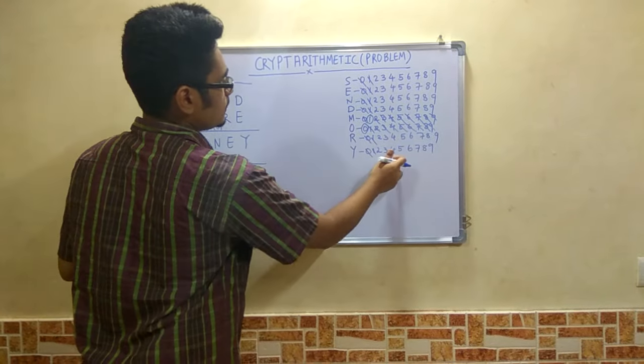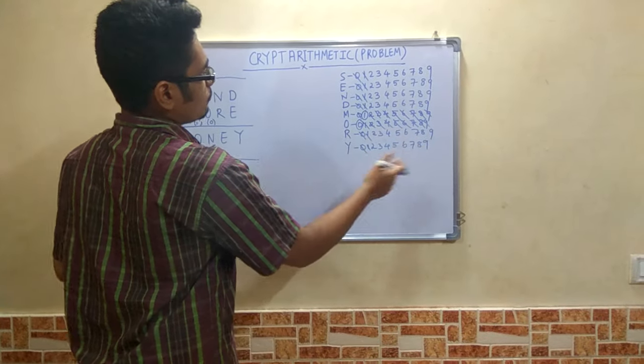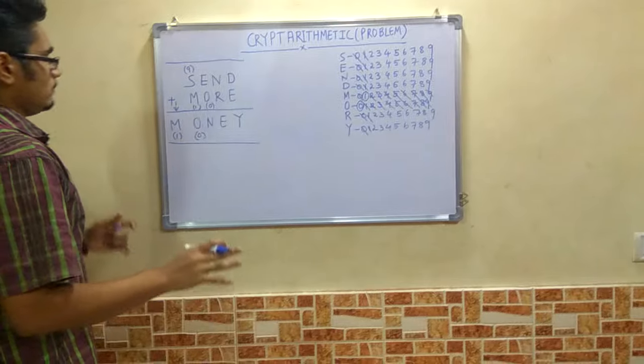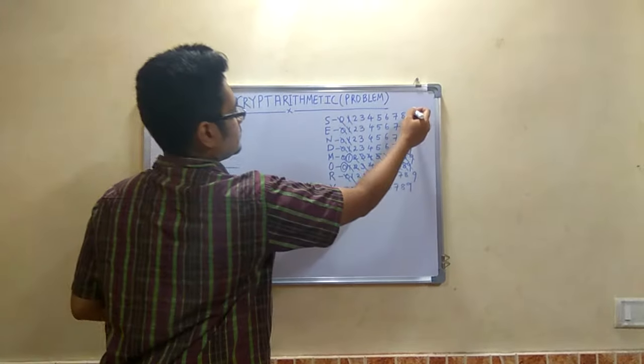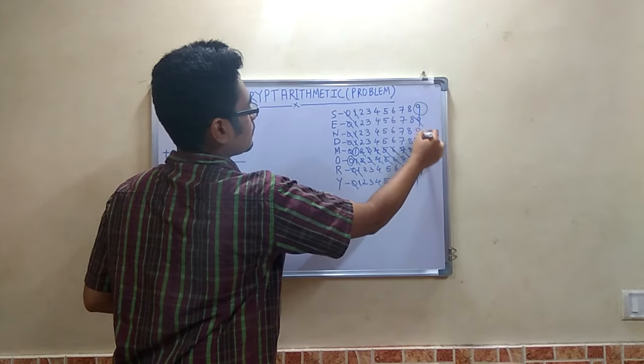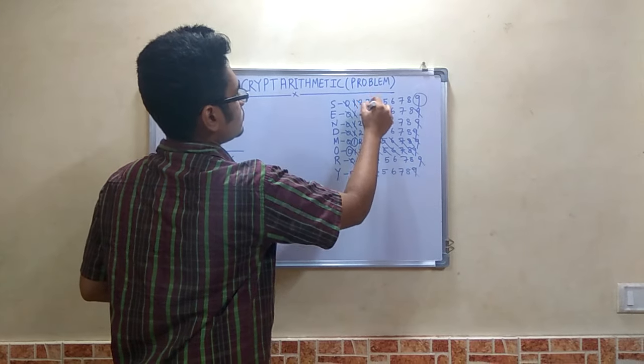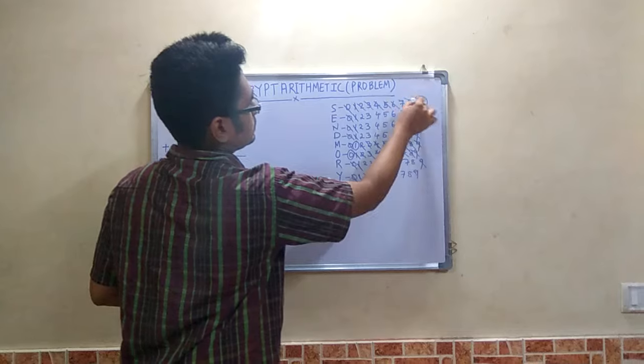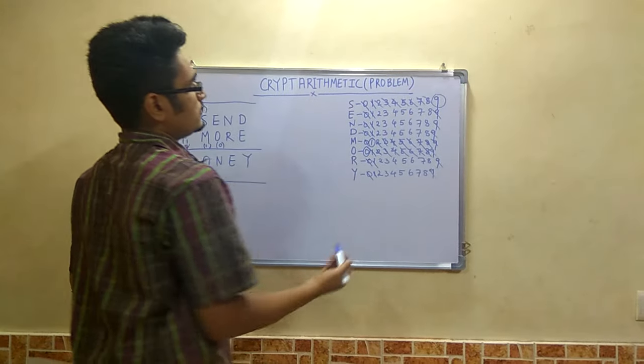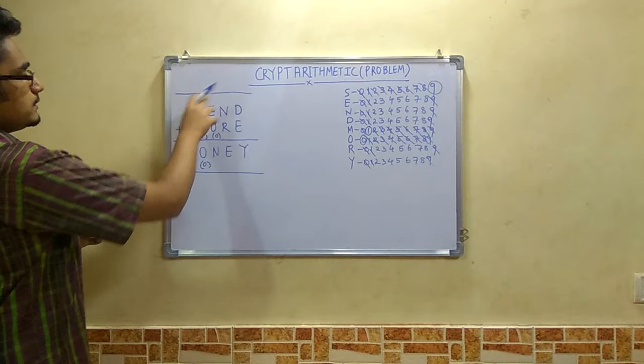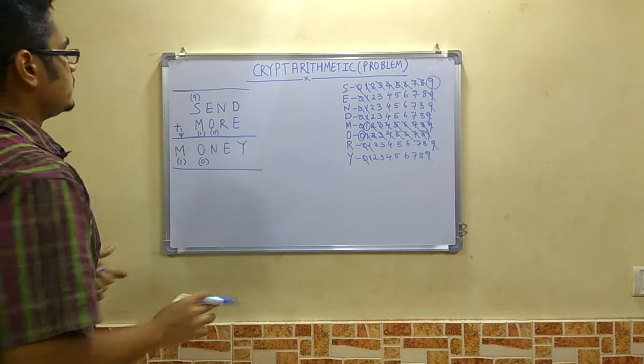Now the numbers left are 2, 3, 4, 5, 6, 7, 8, 9. Out of this 0 and 1 has been ruled out. Now after this we also have S. So S we circle it as 9 and cancel all the other 9's. As well as we will cancel all these. Now the numbers left are 2, 3, 4, 5, 6, 7, 8. Now we have to assign these numbers to these digits.